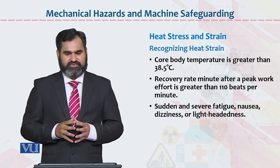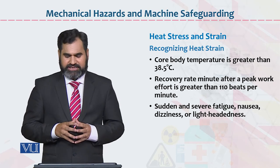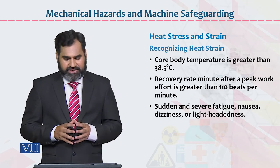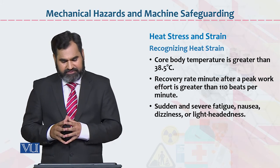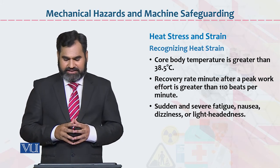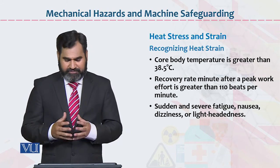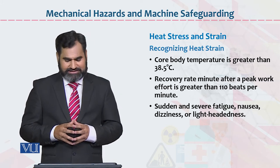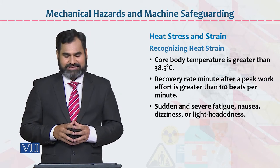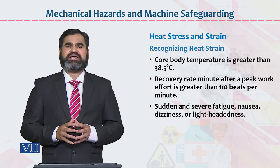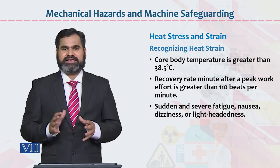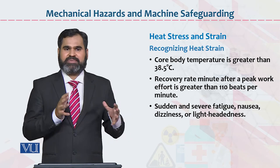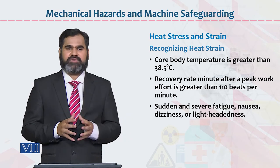Isi tarah baqi bhi examples hain. For example: whole body temperature greater than 38.5 degrees centigrade; recovery rate after peak work effort greater than 110 beats per minute; then sudden and severe fatigue, nausea, dizziness, and light-headedness. Yeh jitni bhi cheezein hain, in ko hum logon ne rakhna hai — kya yeh heat strain ka baais banne ban rahi hain. Agar ban rahi hai, to in ko avoid karna hai.